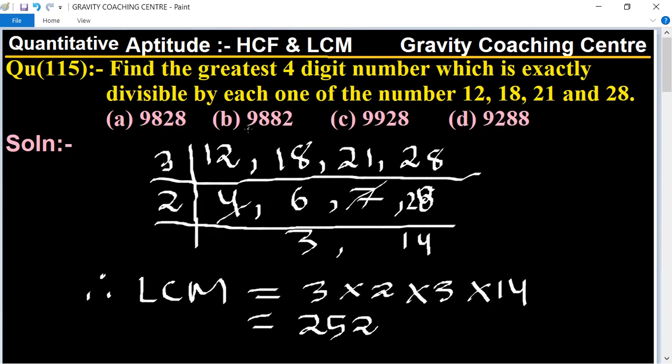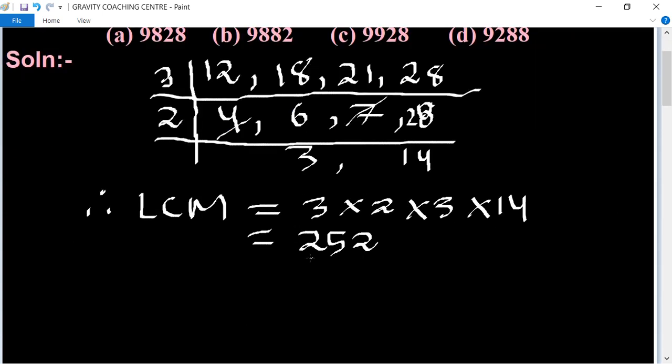And the greatest four-digit number, we know that the greatest four-digit number is 9999. So now you have to find the greatest four-digit which is a multiple of 252.